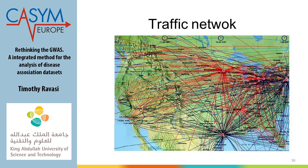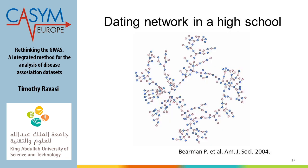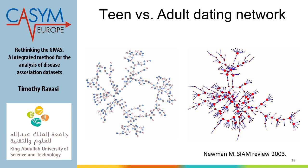Here is a dating network from a high school. Pink nodes are girls and blue are guys. You can see the structure: in high school, people tend to go with friends of friends because it's easy to meet someone through your social circle. A researcher at Santa Fe compared the high school dating network with New York City's. In New York City, there are bigger hub nodes — more successful individuals in the network — and the structure differs from the more linear high school network.